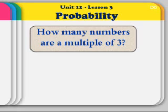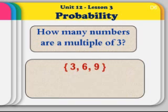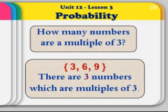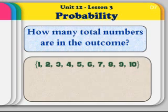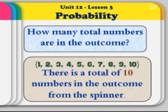Now we are ready to give the probability in fraction form. First thing is, how many numbers are a multiple of 3? We found the numbers 3, 6 and 9. Therefore, there are 3 numbers which are multiples of 3, and the 3 is highlighted. The next thing is, how many total numbers are in the outcome? Well, the outcome numbers were 1 through 10. So how many numbers were there? There is a total of 10 numbers in the outcome from the spinner, and the 10 is highlighted.